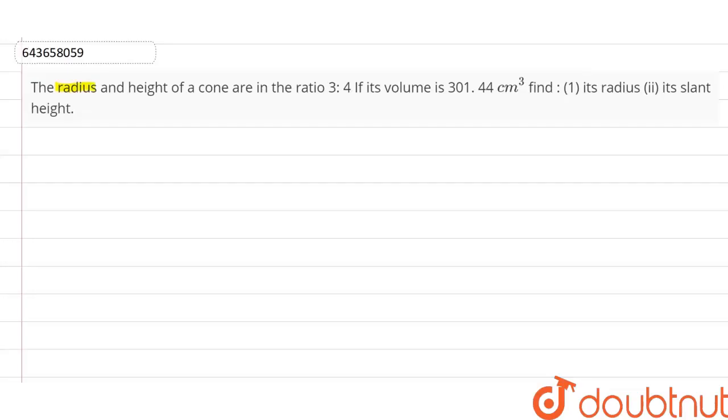Hello students, the radius and height of a cone are in the ratio 3:4. If its volume is 301.44 cm³, find its radius and its slant height. Let the radius of the cone r = 3x and the height h = 4x.